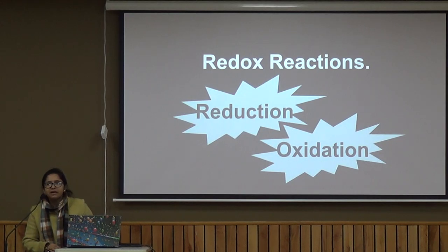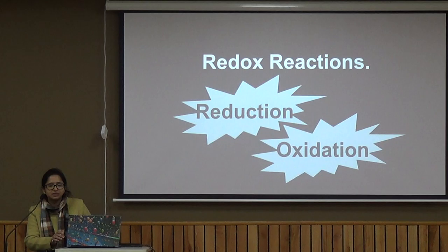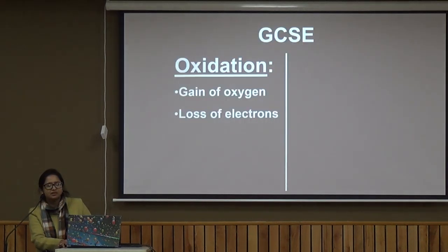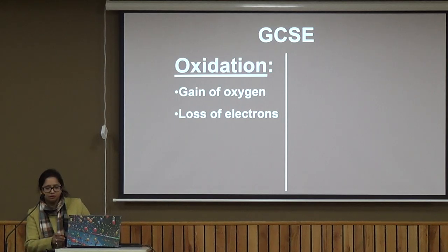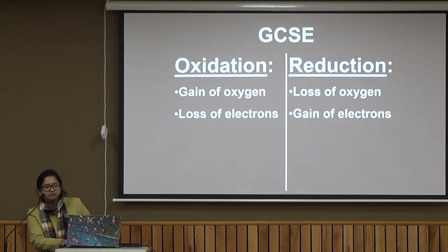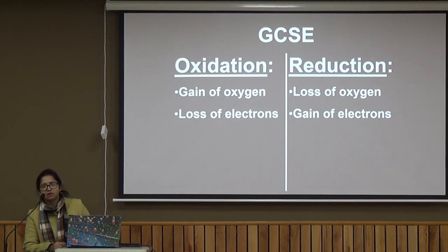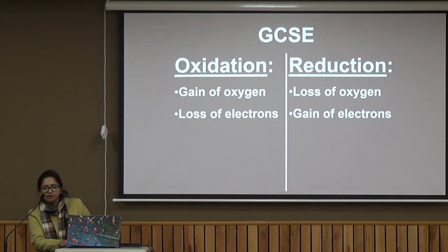Oxidation is the gain of oxygen and loss of electrons. Reduction, in a rough way, is the loss of oxygen and gain of electrons. We also say that an increase in oxidation number is oxidation, and a decrease in oxidation number is reduction.